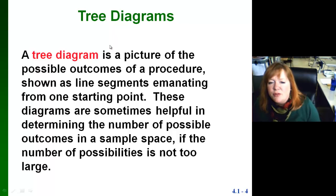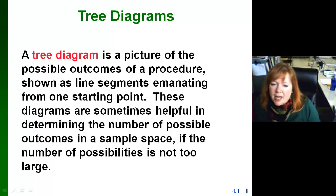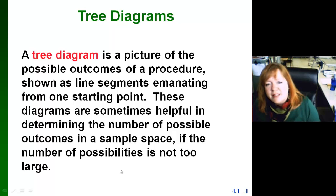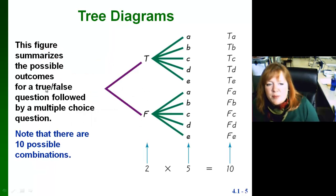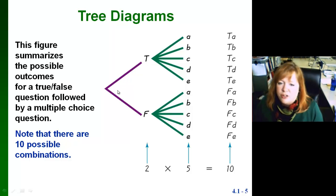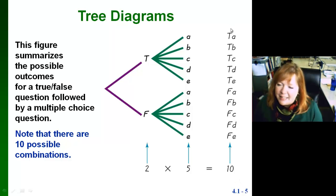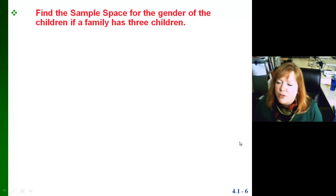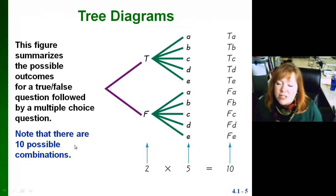Tree diagrams — you've probably done these before. It's a picture of the possible outcomes of a procedure shown as line segments emanating from one starting point. These diagrams are helpful in determining the number of possible outcomes in a sample space when the number of possibilities is not too large. For example, this figure summarizes the possible outcomes for a true-false question followed by a multiple-choice question. You answer true or false, and then you've got five choices for the multiple-choice — giving you ten total possible outcomes. That list of all outcomes is the sample space.